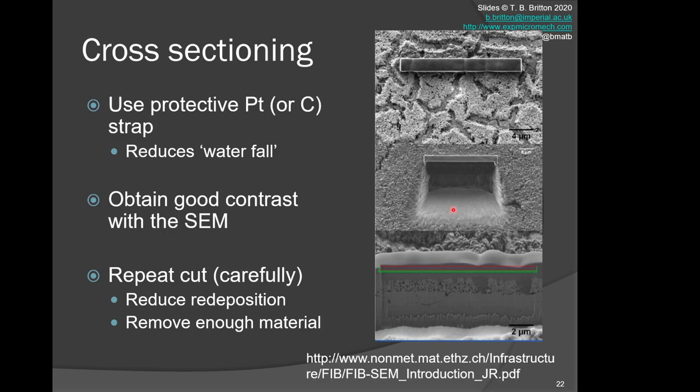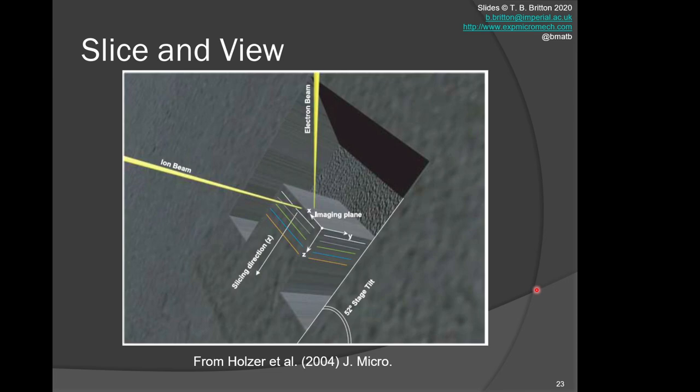If you do this repeatedly—one area of study that we do in the department is slice and view. With slice and view, we sequentially remove layers. We treat the domain such that we can get fast and clean milling of each successive layer with a controlled thickness. We will then image the surface, we will slice, we will image, we will slice, we will image.